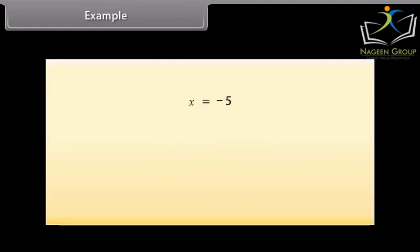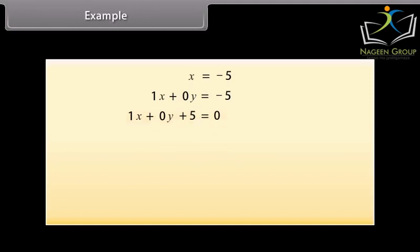Now look at this equation. We will write it in two variables. This can be written as 1X plus 0Y equals minus 5, or 1X plus 0Y plus 5 equals 0. Similarly, the equation Y equals 2 can be written as 0X plus 1Y equals 2, or 0X plus 1Y minus 2 equals 0.